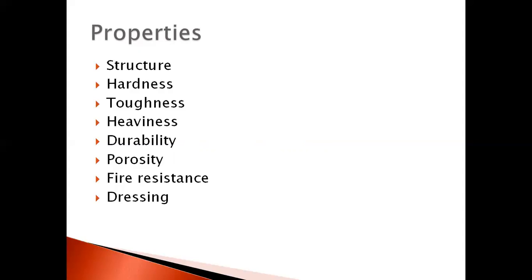The second property is hardness — the rock should resist friction. The third is toughness — it should resist vibration and load. The fourth is heaviness — the weight of the rock should be sufficient, and this is measured by specific gravity. The specific gravity of a good rock should be between 2.4 and 2.8. The fifth property is durability — the rock should last for a long duration and resist climatic conditions and weathering.